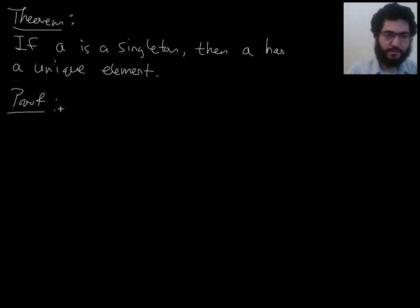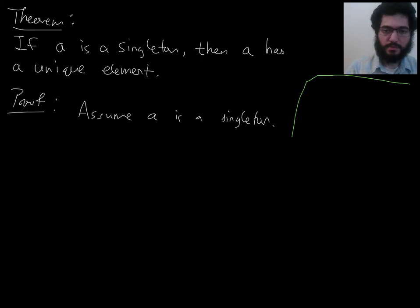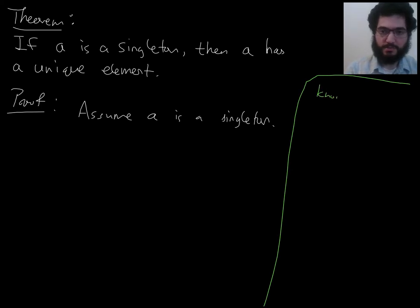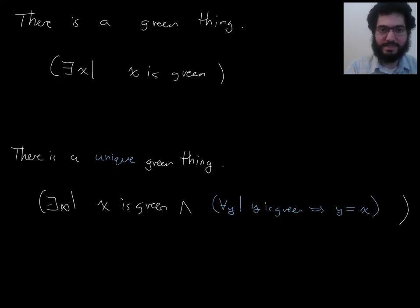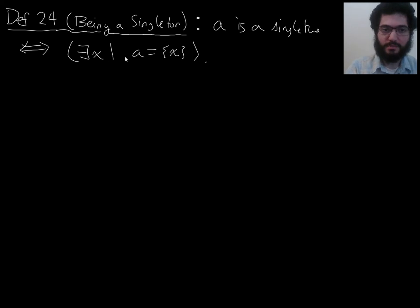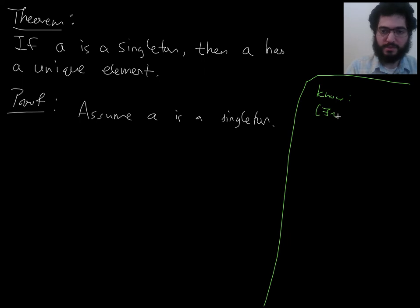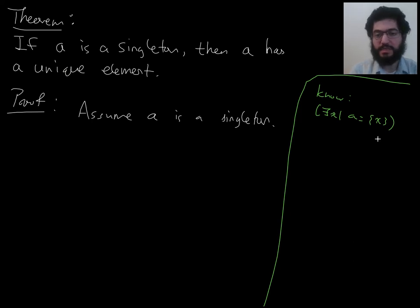So, if A is a singleton, then we expect that A has a unique element. Let's make this a theorem and prove it to get practice with uniqueness statements and the idea of being a singleton — what it means when we say something has the form of a singleton. Proof: it's an if-then, so I'll assume that A is a singleton. I know A is a singleton, so using definition 24, there exists something such that A is singleton of that thing.